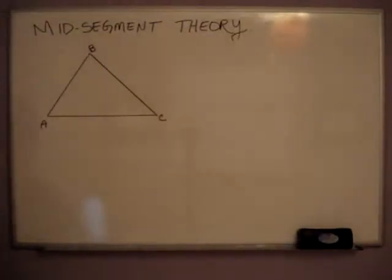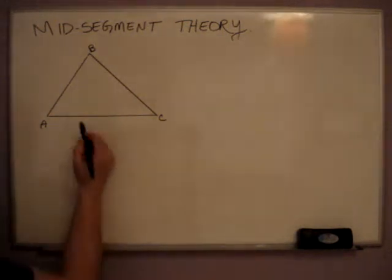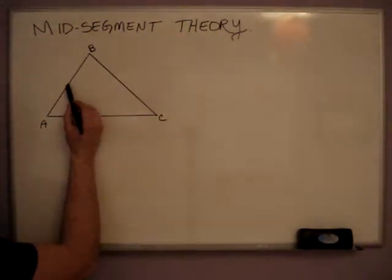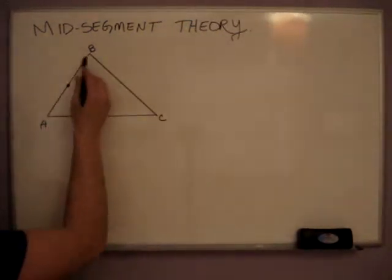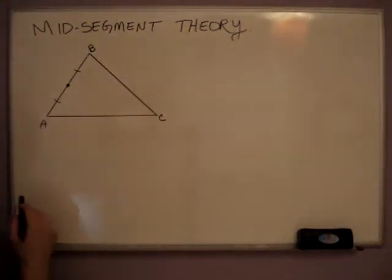We're going to talk about the mid-segment theory, which the definition of a mid-segment line is a line that starts where one of its vertices bisects another line of a triangle in half.